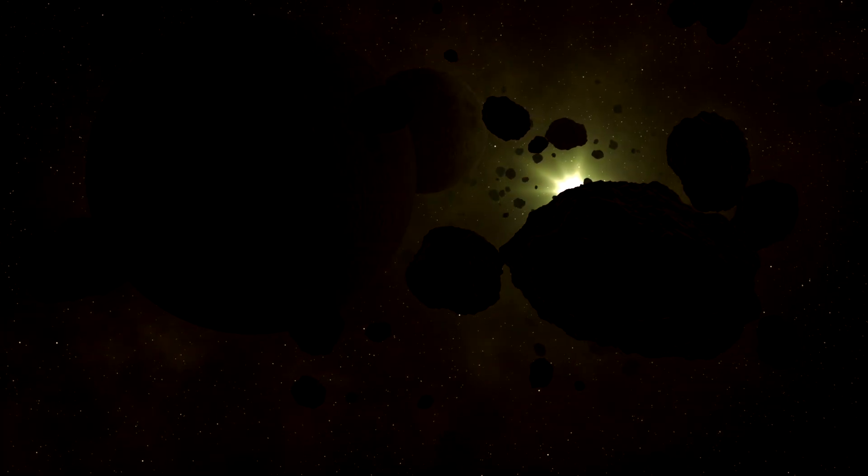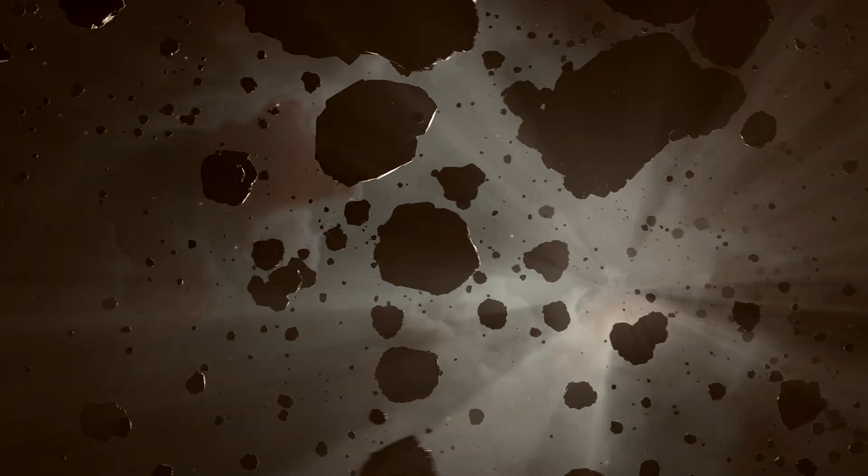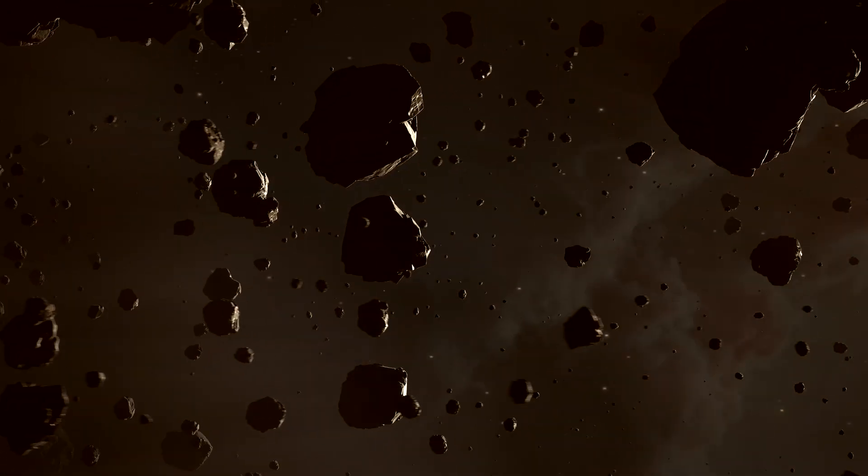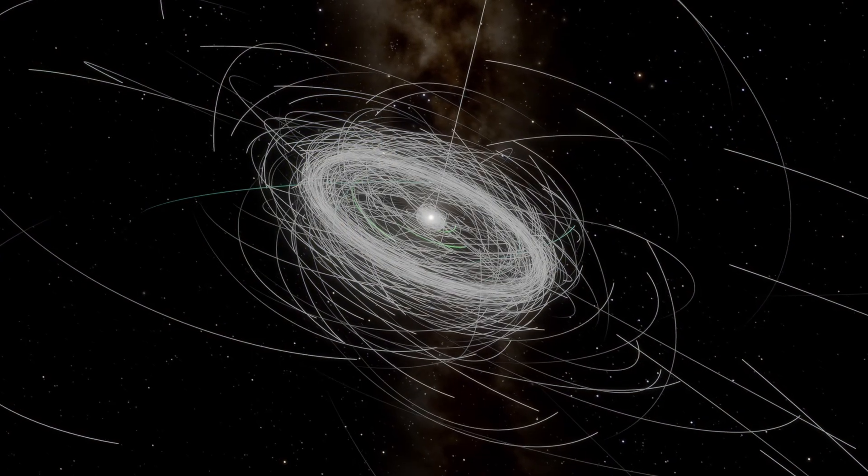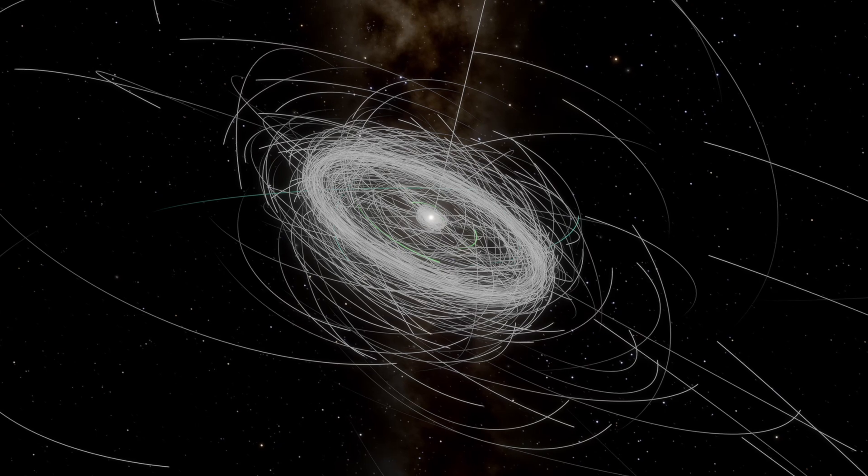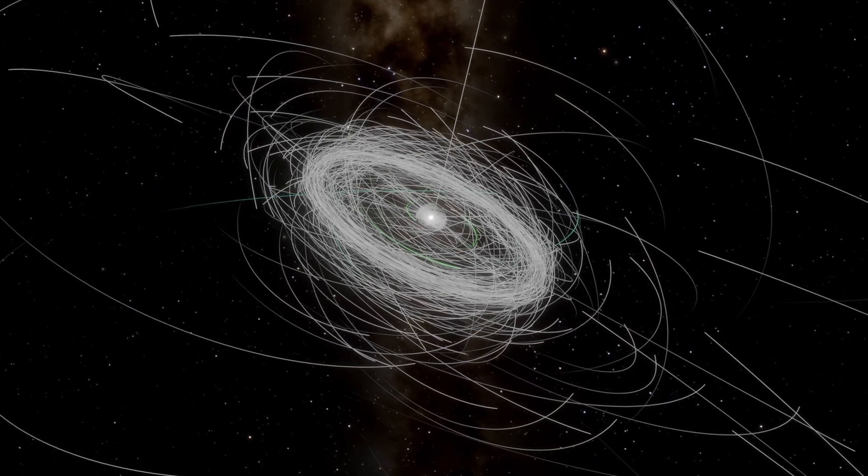It could have disturbed the outer regions of the disk, scattering planetesimals into eccentric orbits. It might have carved gaps, tilted trajectories or even helped seed the distant Oort cloud with icy debris. And long after it vanished, those disturbances would remain, etched into the architecture of the solar system itself.